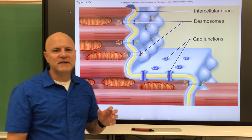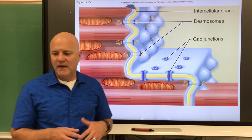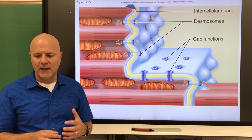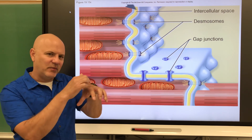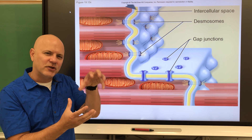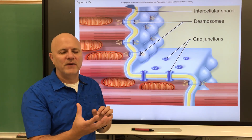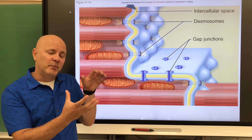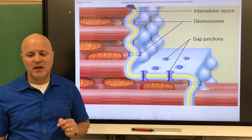This arrangement forms what is known as a functional syncytium — a mass of merging cells that act as a single coordinated unit. There is one functional syncytium in the walls of the atria, so stimulating the atria anywhere causes both atria to contract. There is another in the walls of the ventricles, so stimulating the ventricles at any point causes all ventricular cells to contract simultaneously.